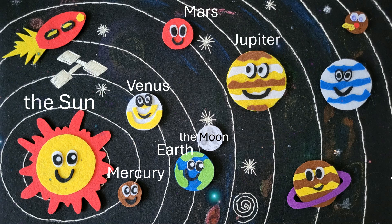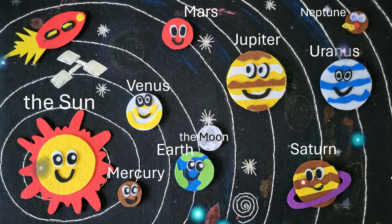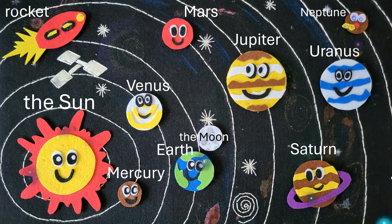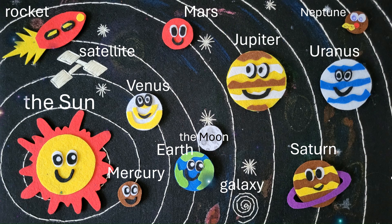Jupiter, Saturn, Uranus, and Neptune. You can see also a rocket in the sky, or a satellite, a galaxy, and a star.